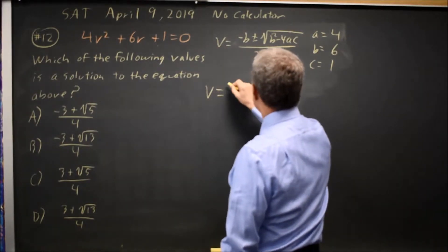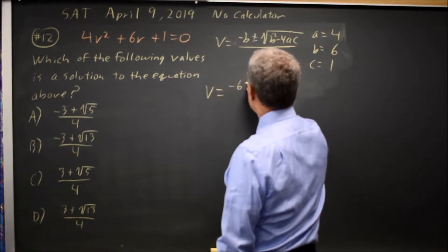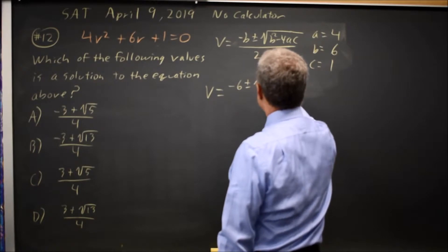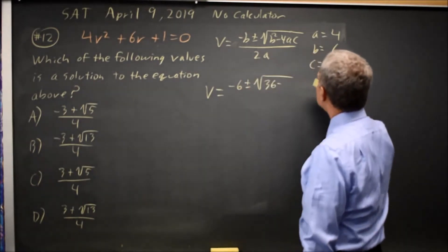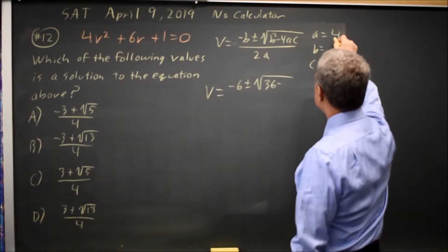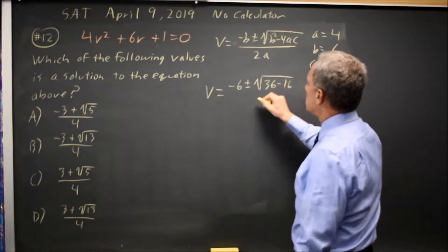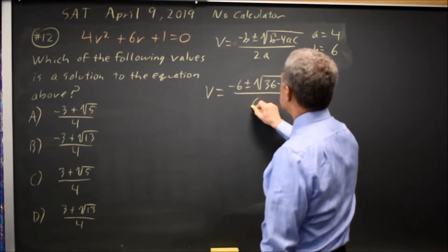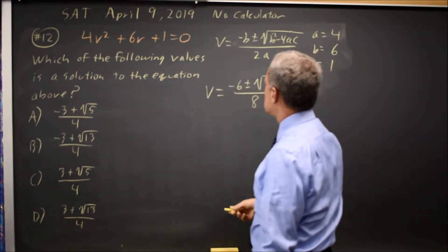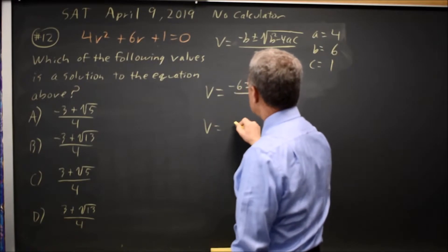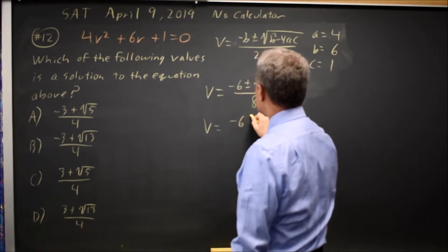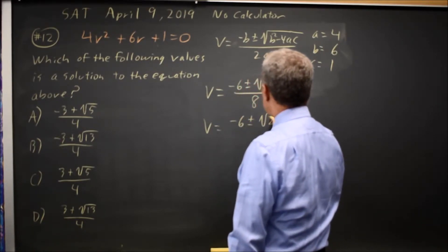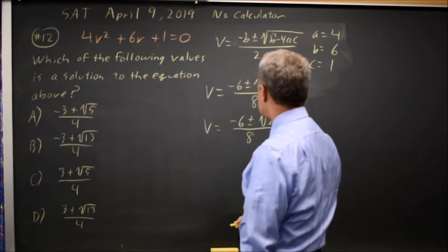According to the quadratic formula, v is negative 6 plus or minus square root of 6 squared, which is 36, minus 4 times 4 is 16, times 1 is still 16, over 2 times 4 is 8. So v equals negative 6 plus or minus root 20 over 8.